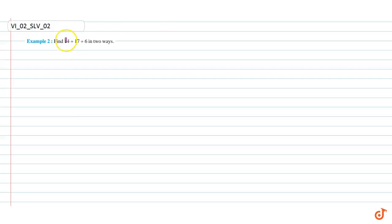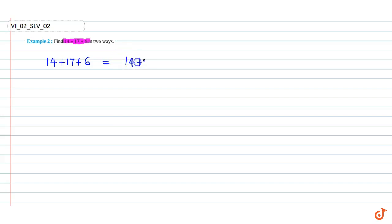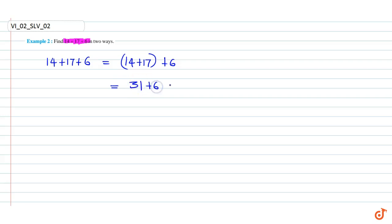In this question we have to find the given sum in two ways. The sum is 14 plus 17 plus 6. This is equal to 14 plus 17 plus 6, which is equal to 31 plus 6, which is equal to 37.